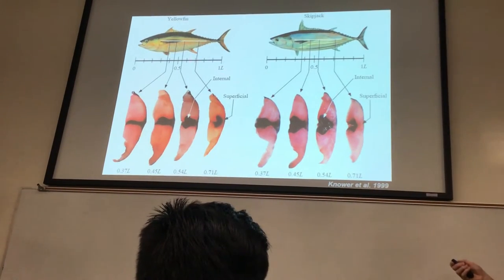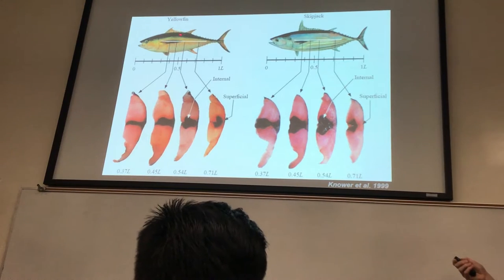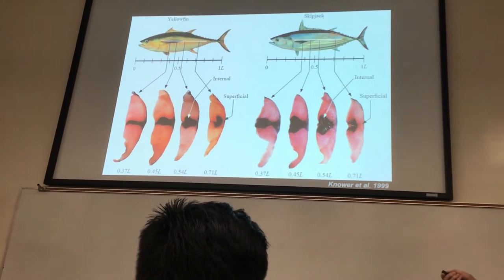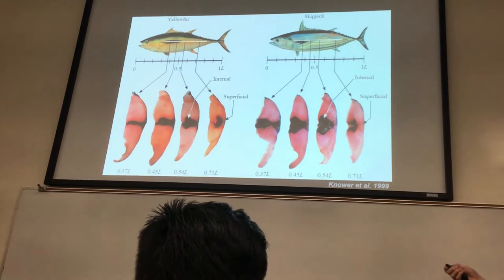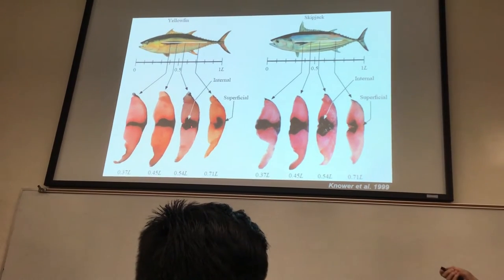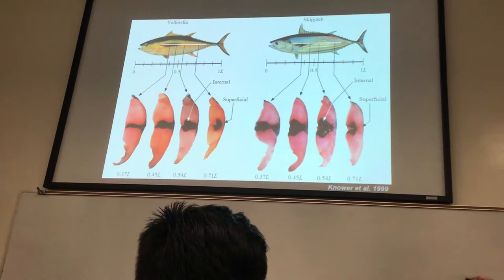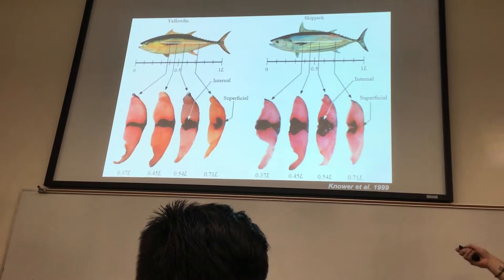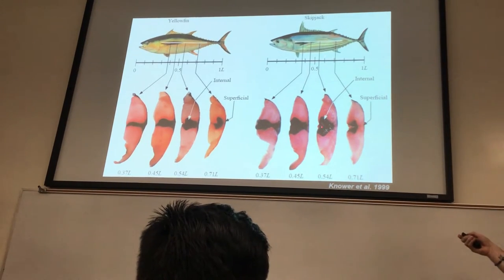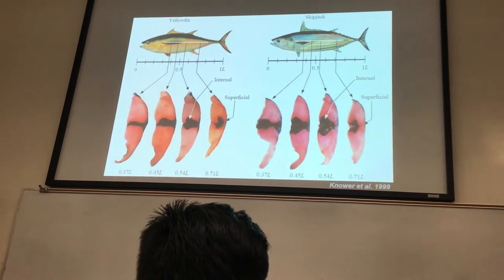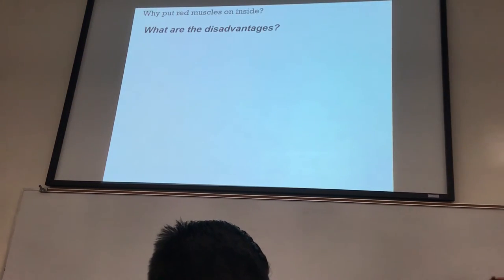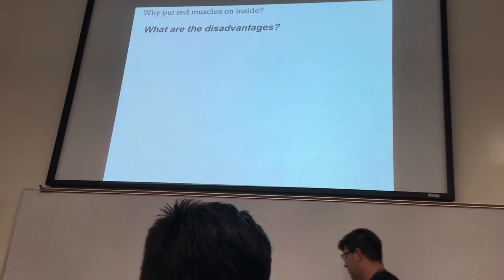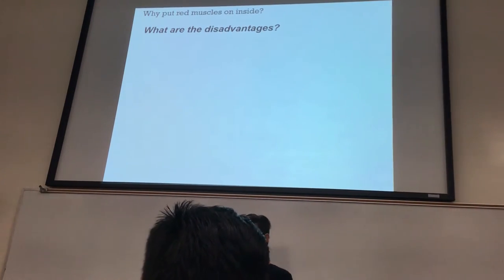Looking at the yellowfin and the skipjack tuna, we're looking at where the red muscle is along the length of the animal. The yellowfin tuna's red muscle is more superficial — closer to the exterior of the body. Whereas with the skipjack, you can see that it's going to be more internal. So why put red muscle on the inside?